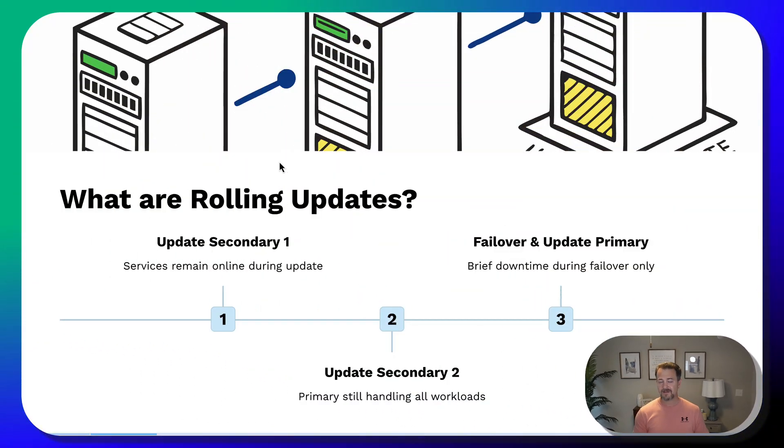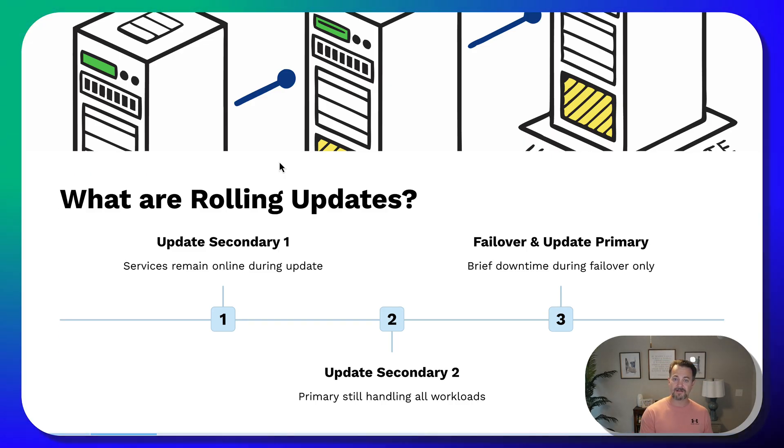First, we're going to cover what rolling updates are. If you're just running single instances in your environment, rolling updates may be a new concept. They are used to update AGs and even failover clustered instances. They are typically performed to reduce downtime — not zero downtime, but they are used to minimize that.